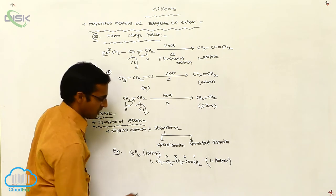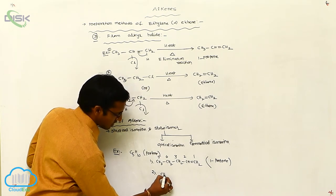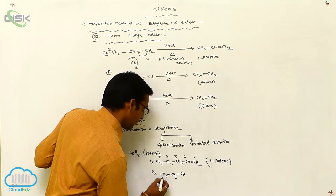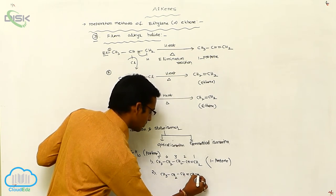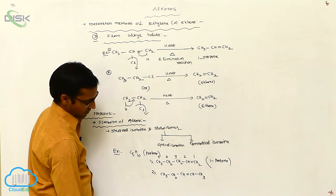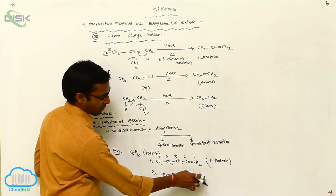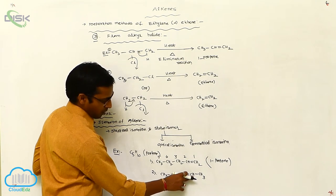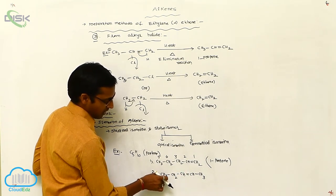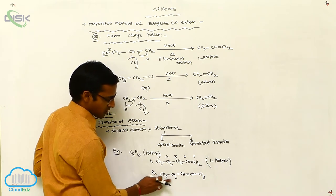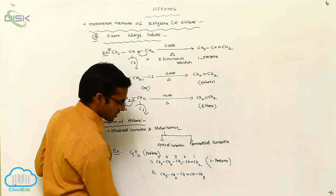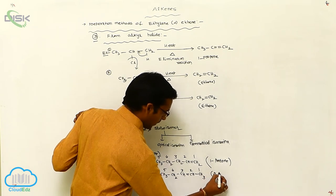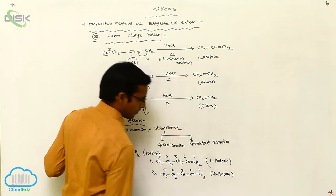This can be represented in a different way. See here: CH3, CH2, CH double bond CH, CH3 — 1, 2, 3, 4, 5 — total 5 carbons. Hydrogens: 3+1=4, 4+2=6, 6+3=9, 9+1=10 — hydrogens are also same, C5H10. The name of this compound is 2-pentene, because the double bond is at the second position.